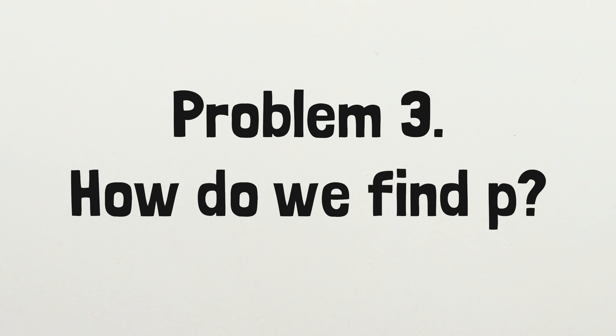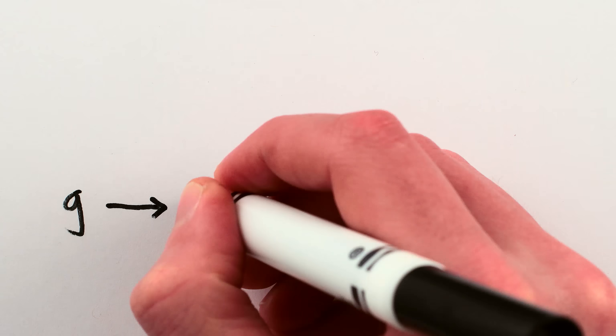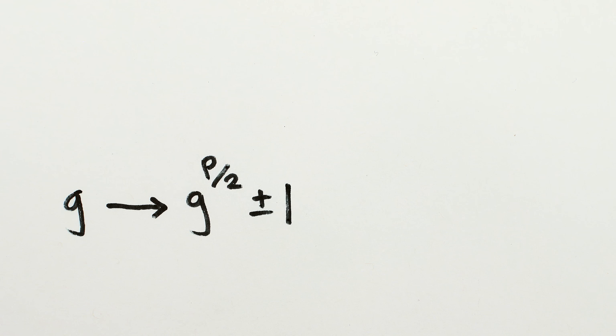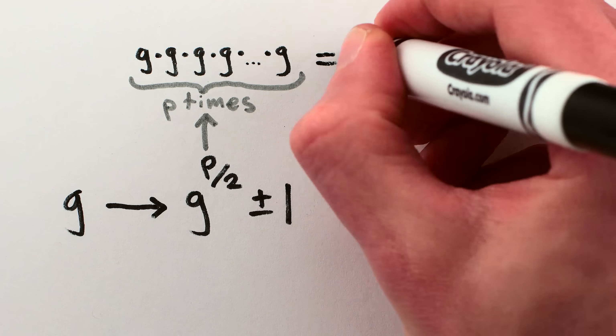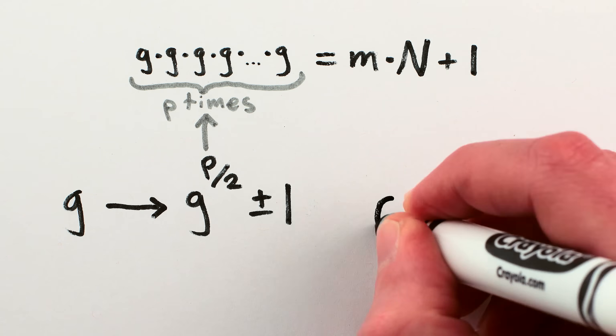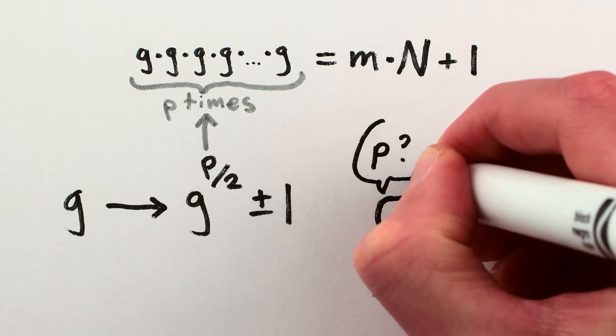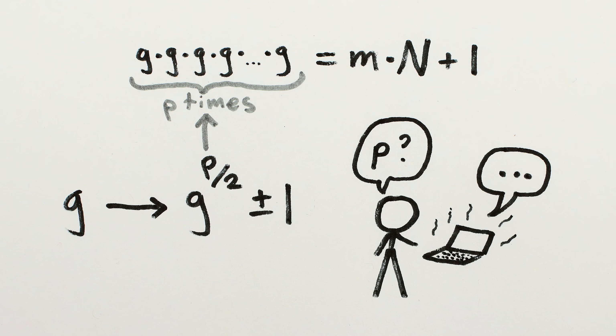However, problem number 3 is the big one. Remember, to turn a crappy guess into a good guess, we need to know how many times you have to multiply our guess by itself before we get a multiple of n plus 1. And for a normal computer, the act of finding that power p takes a ton of work and time.